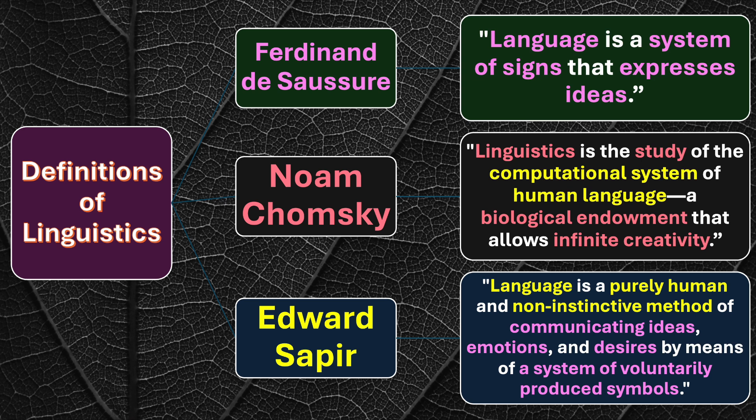First is 'purely human.' Language is only for humans — when we talk about language, we mean human language, because no other creature in the world can express itself the way humans can. That is why language is a property of human beings; human beings are the owners of language. The second point is 'non-instinctive method.'